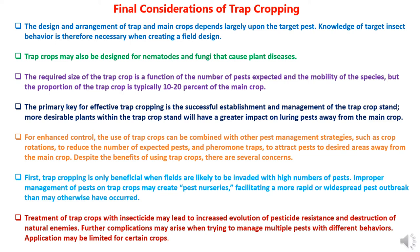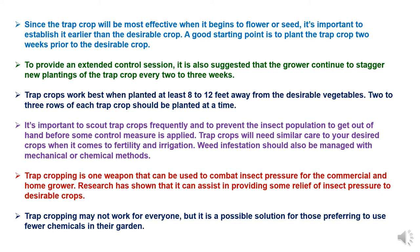Treatment of trap crops with insecticide may lead to increased evolution of pesticide resistance and destruction of natural enemies. Further complications may arise when trying to manage multiple pests with different behaviors. Applications may be limited for certain crops. Since the trap crop will be most effective when it begins to flower or seed, it's important to establish it earlier than the desirable crop. A good starting point is to plant the trap crop two weeks prior to the desirable crop, and stagger new plantings every two to three weeks.